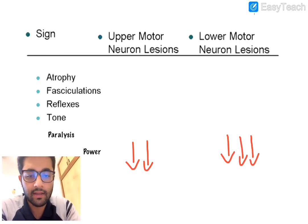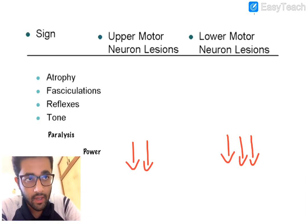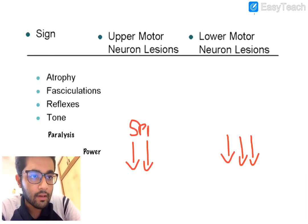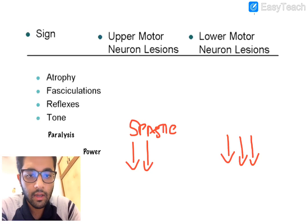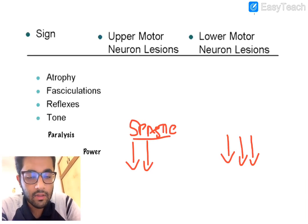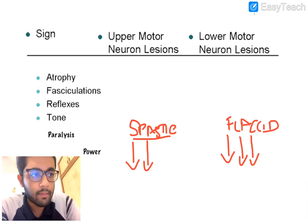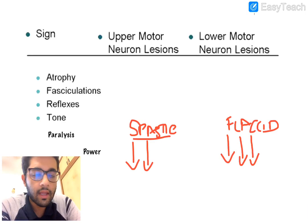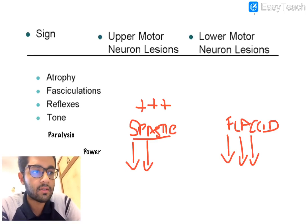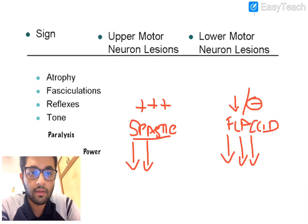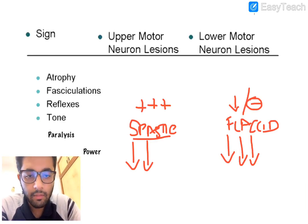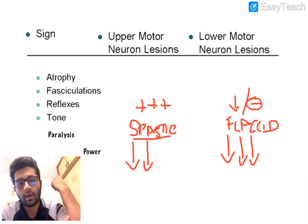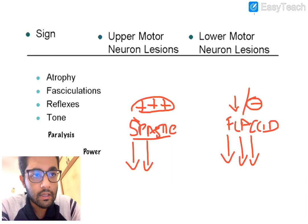Power is reduced in both UMN and LMN lesions, slightly more in LMN. In a UMN lesion we see a spastic type of paralysis, whereas LMN shows a flaccid type of paralysis — please don't confuse spasticity with rigidity. Reflexes are exaggerated in UMN lesions and decreased or absent in LMN lesions. Superficial reflexes like abdominal and cremasteric are absent in both; deep reflexes like biceps and knee jerk are increased in UMN and decreased in LMN.